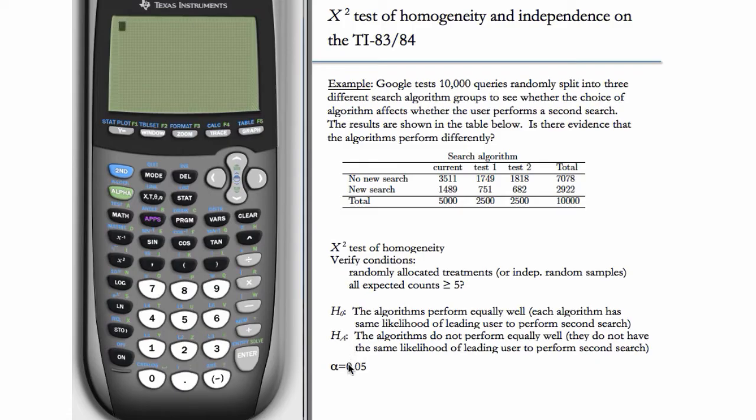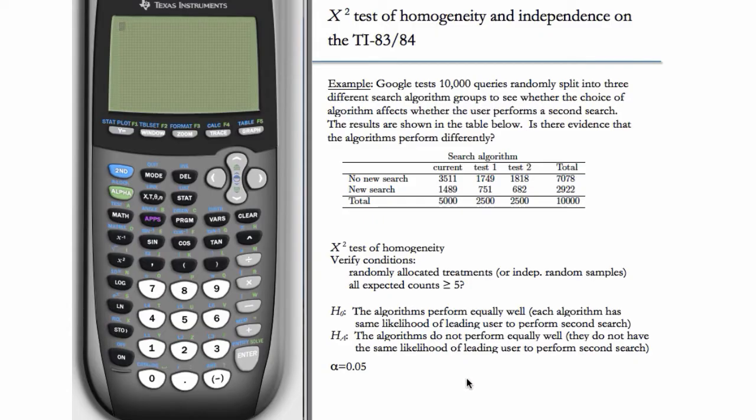And now we have our hypotheses. The null hypothesis, H sub 0, is that the algorithms perform equally well. Each algorithm has the same likelihood of leading user to perform a second search. The alternate hypothesis is that the algorithms do not perform equally well. They do not have the same likelihood of leading user to perform a second search. We'll set alpha to be 0.05.